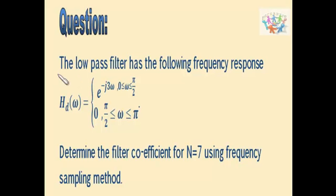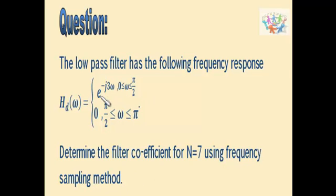In this problem, a low pass filter has the following frequency response and we need to determine the filter coefficients for N equal to 7 using the frequency sampling method. From this we can see that the alpha value is 3, because the general form of H(e^jω) is e^(−jαω). So we have the value of alpha equal to 3.